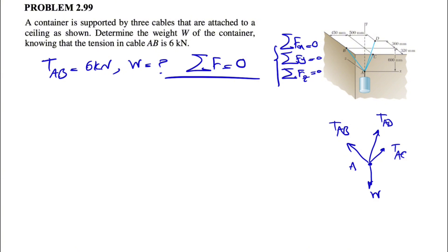If we look at this, we'll see that we have three unknowns: TAD, TAC, and W, which is the weight of the container and what we are trying to figure out. We also have three equations, so we should be able to find the answer for all the unknowns. The first step is to find each force in vector form, so let's start with TAB.